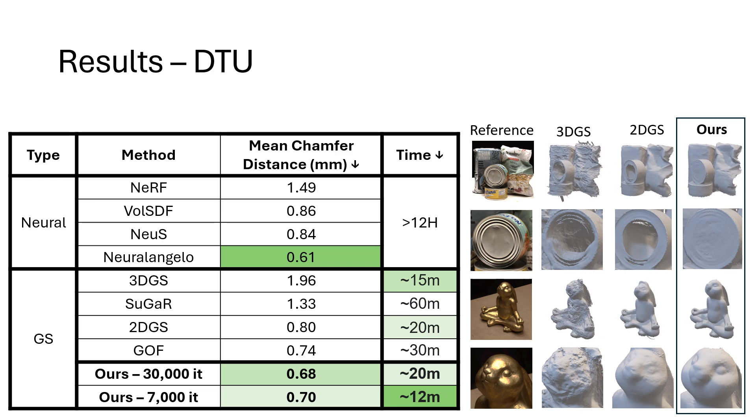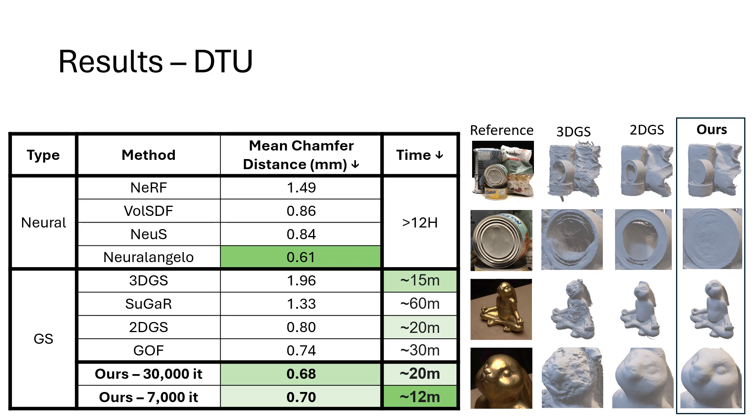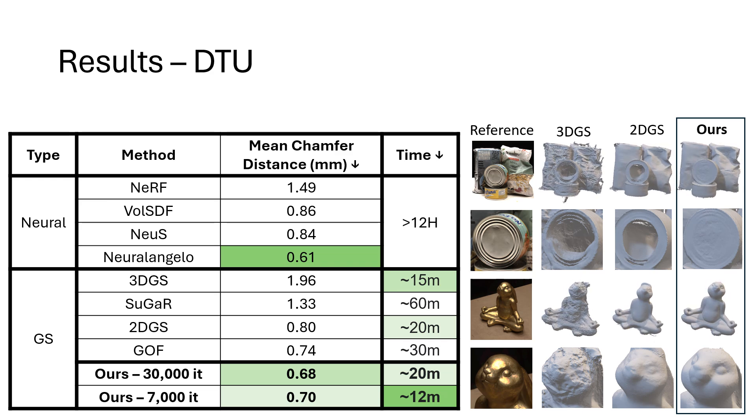We note that after only 7,000 Gaussian Splatting iterations, we achieve similar results to 30,000 iterations, thus demonstrating our method's efficiency.